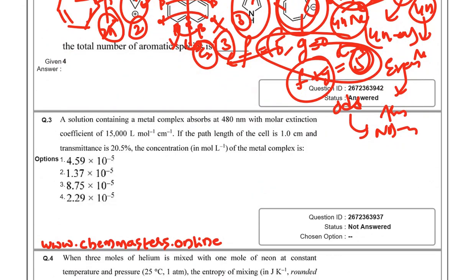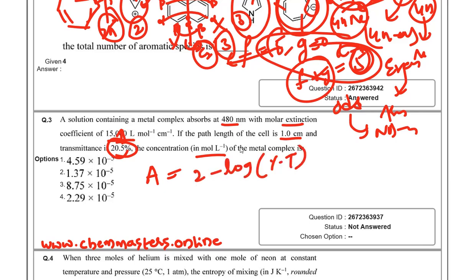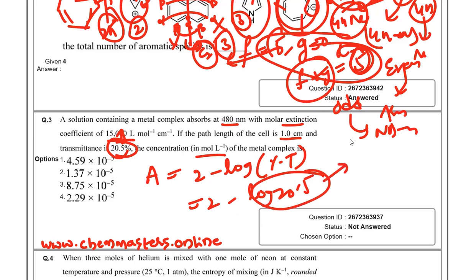The next question: a solution containing a metal complex absorbs at 480 nm with a molar extinction coefficient of 15,000 L·mol⁻¹·cm⁻¹. The path length of the cell is 1 cm and the transmittance is 20.5%. The concentration in mol/L of the metal complex is to be found. First, find the absorbance using: A = 2 − log(%T) = 2 − log(20.5), which gives approximately 0.6882.